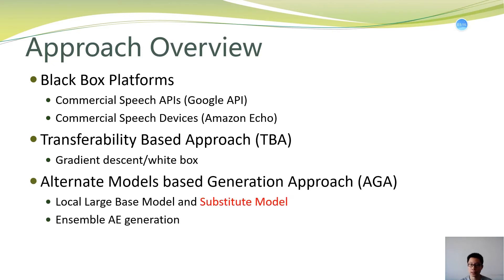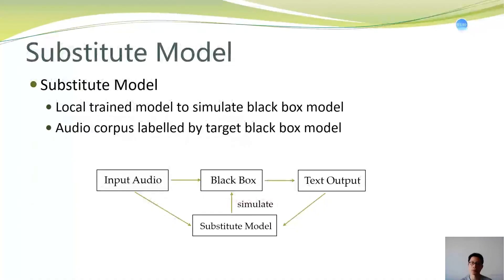Based on this limitation, we mainly propose another idea called the Alternate Model Based Generation approach, shortened as AGA. In the AGA method, we propose using one large local base model together with one substitute model to do ensemble AE generation. A substitute model is a locally trained model to simulate the black box model. We need a bunch of audio files labeled by the target black box model, then use those audio files and text labels to train a local model to simulate the black box model.